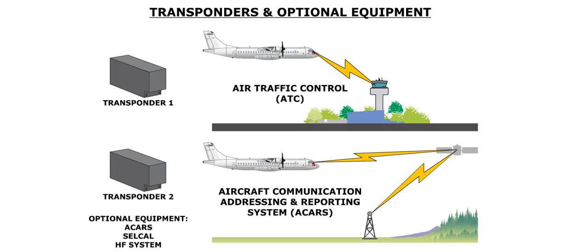ACARS is a digital data link system used for transmitting short, simple messages between an aircraft and a ground station, via satellite or radio.